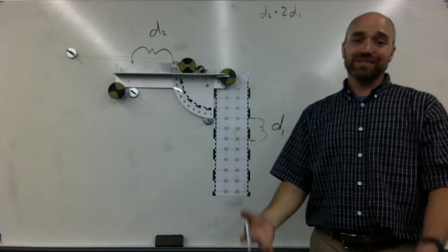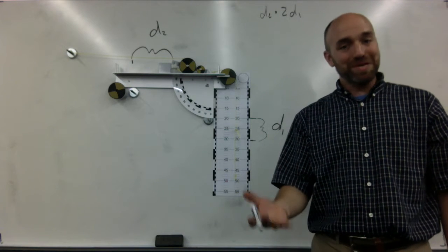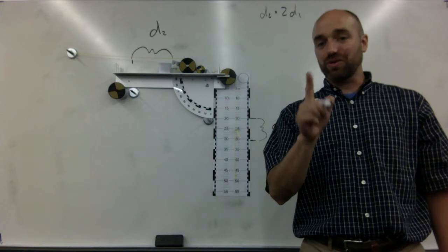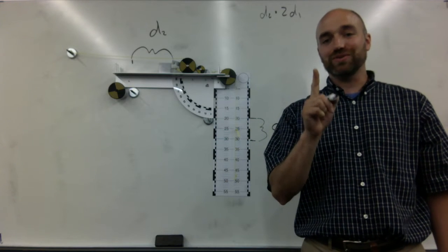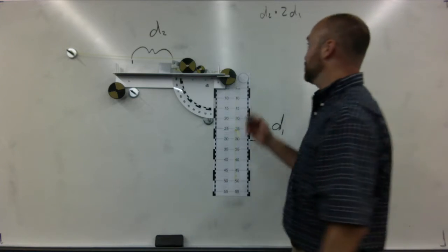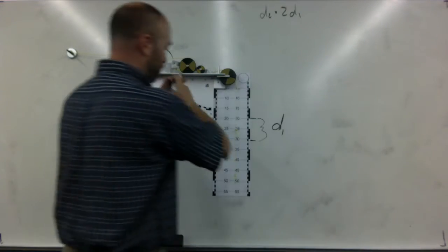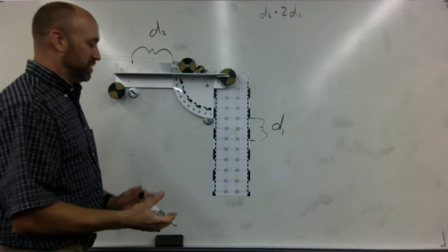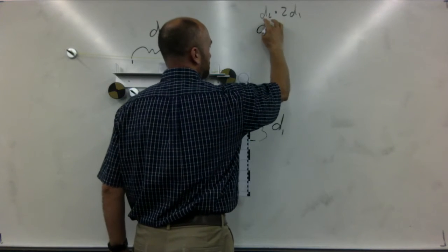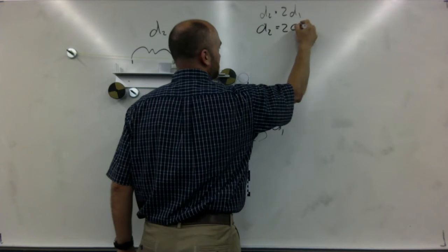D2 is twice D1. The distance mass two travels is twice the distance that mass one travels. And if the distance is twice as far, the speed is twice as far, and also the acceleration is twice as fast. And that's the big key. That's the hardest part of this whole problem.